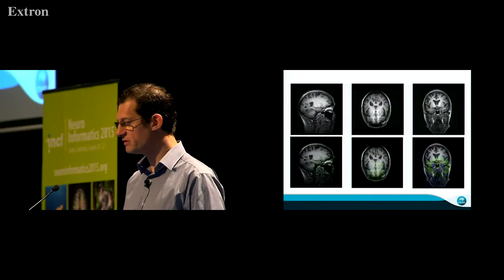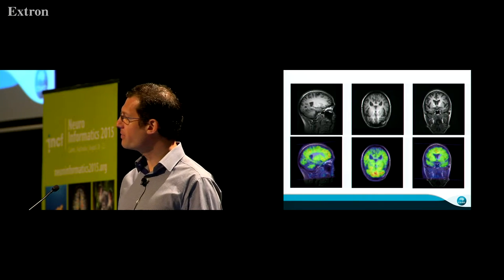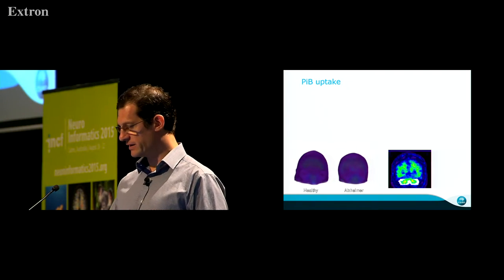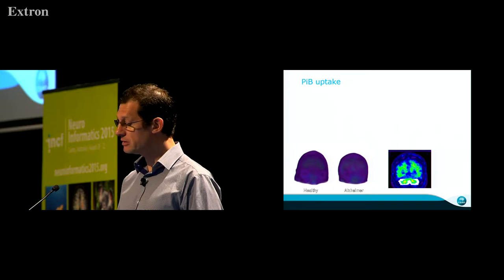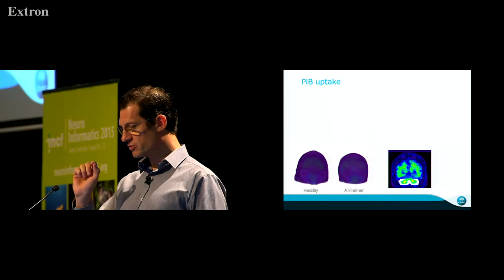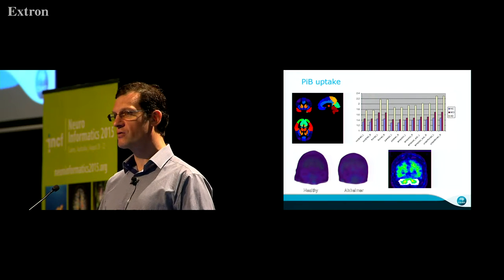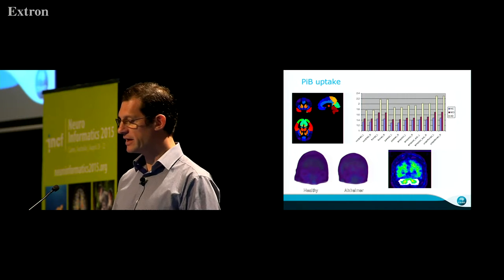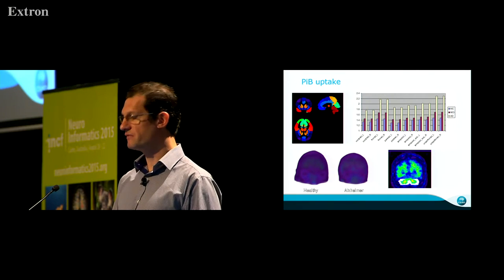The standard approach is: take your MRI and PET scans, align them together, then define a reference region — for Pittsburgh Compound B, that's the cerebellar cortex. You segment that area, compute its average, and normalize the PET image by that average to get SUVR. Then using an MRI parcellation, you compute the average signal in specific brain areas, which gives you an estimate of amyloid deposition throughout the brain.